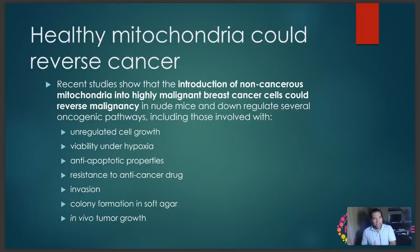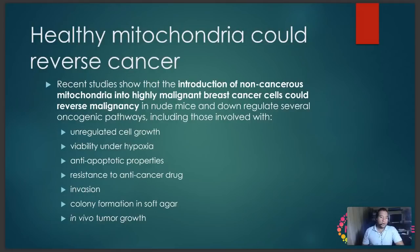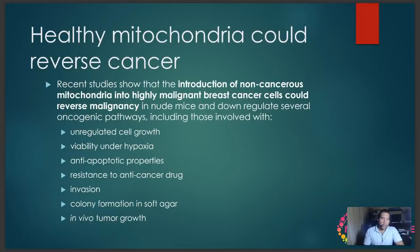Oncogenic factors push the cell towards becoming immortal and becoming a cancer cell. Unregulated cell growth — cell growth without apoptosis — is re-regulated when you put healthy mitochondria back into the cell. Viability under hypoxia re-establishes with healthy mitochondria. Anti-apoptotic properties get suppressed. Resistance to anti-cancer drugs gets reversed. Invasion, colony forming, and in vivo tumor growth — all things showing the ability of the cell to turn into a tumor — seem to be reversed when you add healthy mitochondria back into a malignant cell.